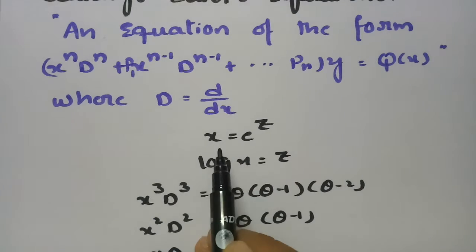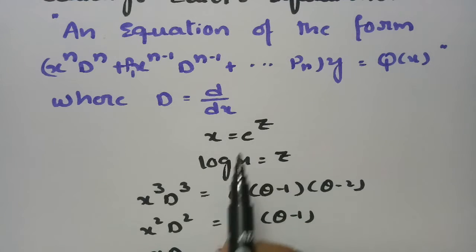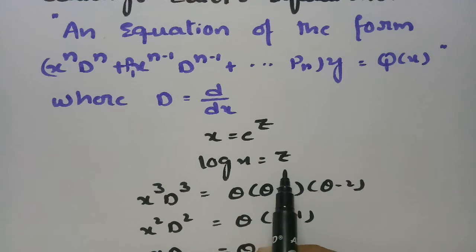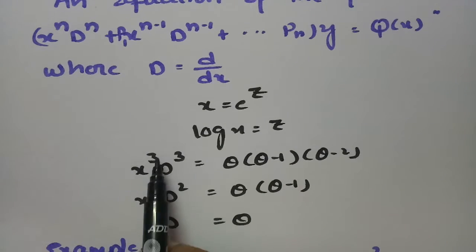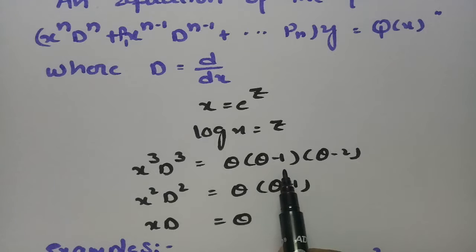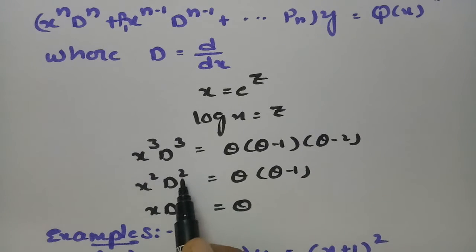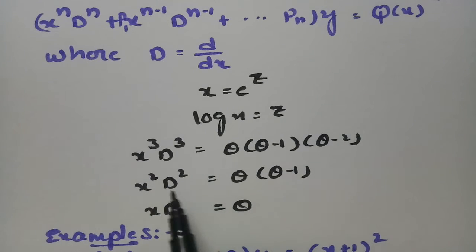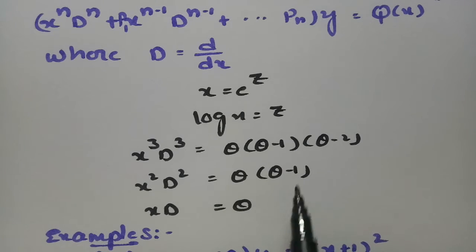The substitution is as follows: in place of x we write e^z, and in place of log x we write z. Also, x³D³ is replaced by θ(θ−1)(θ−2), x²D² is replaced by θ(θ−1), and xD is replaced by θ.